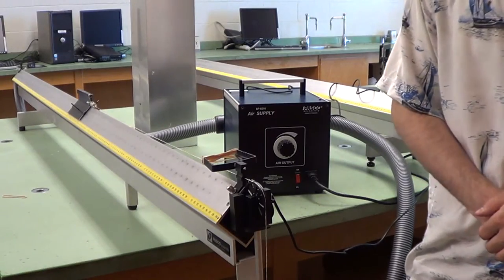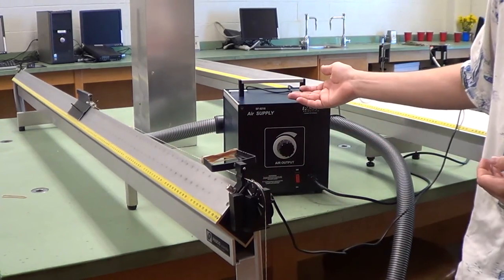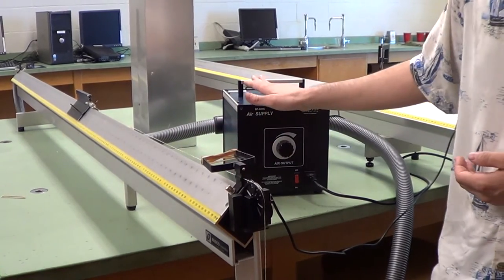For this experiment, your equipment is as follows. Like usual, you have the glider track with the bellows that makes it frictionless. Make sure that the bellow is turned on the entire time.